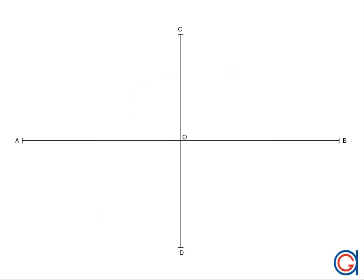Good evening. Today we are going to draw an ellipse given its two axes. We remind you that an ellipse is a curve in a plane surrounding two focal points, such that the sum of the distances to the two focal points is constant for every point on the curve. This constant is also equal to the length of the longest axis of our ellipse, in this case AB, as can be seen here on the screen.